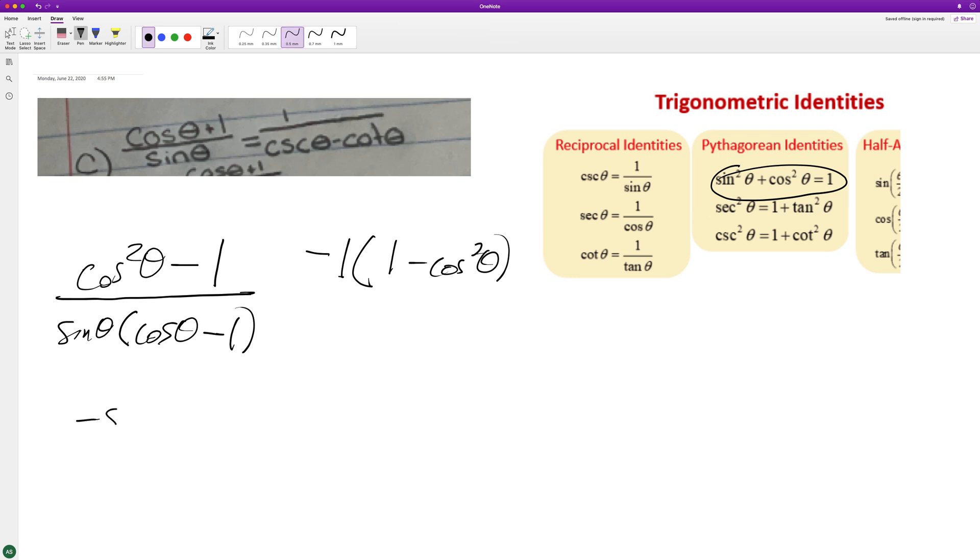negative sine squared theta over sine theta times cosine theta minus 1. So this cancels out one of the squared terms, and we end up with negative sine theta over cosine theta minus 1.